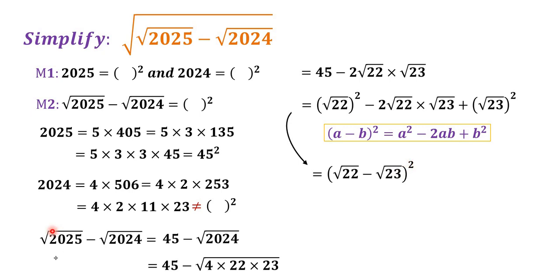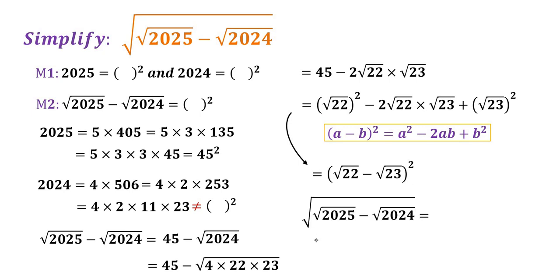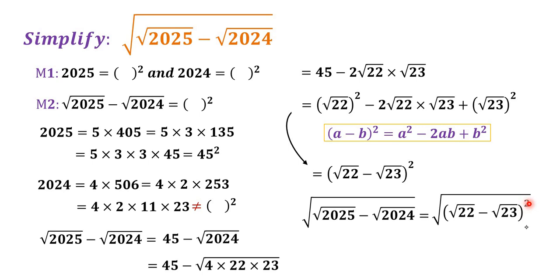So we have shown that square root of 2025 minus square root of 2024 equals (square root of 22 minus square root of 23)². With this result, we go back to the original expression: square root of (square root of 2025 minus square root of 2024). This becomes square root of (square root of 22 minus square root of 23)². To get a positive value, the final answer is square root of 23 minus square root of 22.